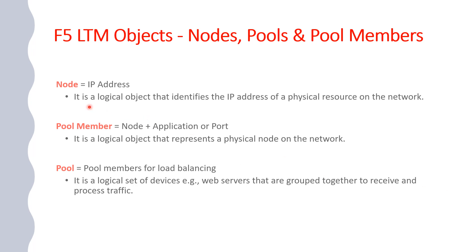So what is a node? A node is basically an IP address on an F5 device. That essentially means that whatever device, whatever machine or whatever backend server you have in your network, and you assign an IP on that device — that is termed as a node. For example, if I've got three different servers hosting the same content that needs to be load balanced, I'll assign IP addresses to those three servers, and those will become my nodes on an F5 device. We will see that in the next slide.